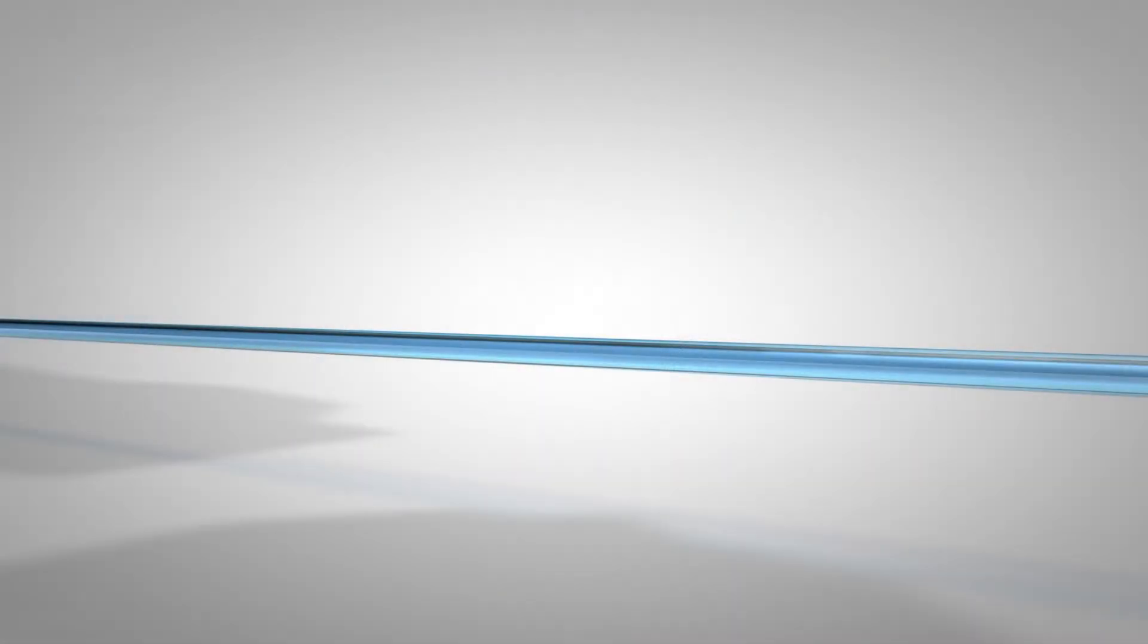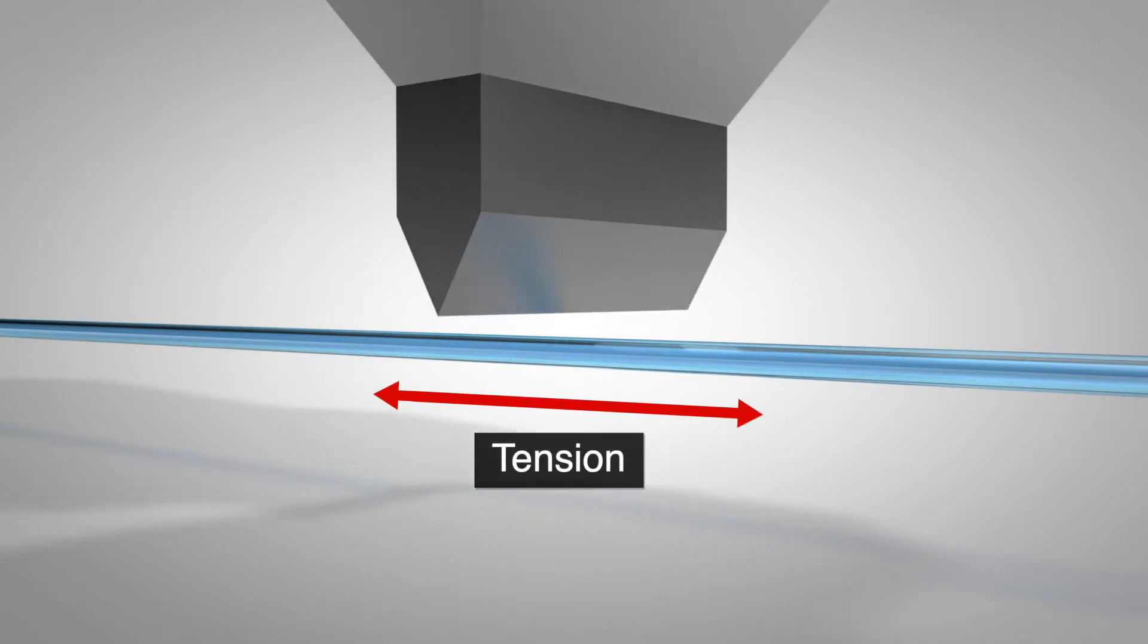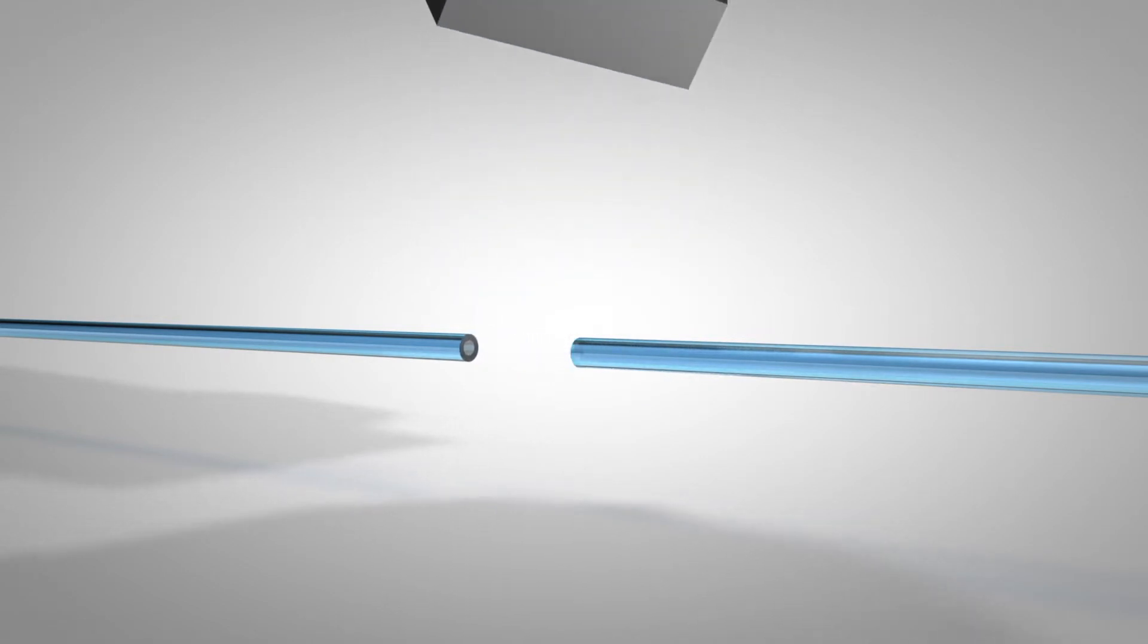The tension and scribe cleaving method used in Vitran cleavers first places the fiber under a known tension. The cleave blade then gradually moves forward in a pecking motion until the blade just strikes the fiber. This creates a scribe mark on the surface of the fiber. The tension then causes that scribe mark to propagate uniformly over the cross-section of the fiber, resulting in a cleaved surface.